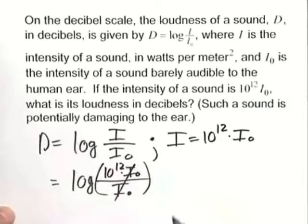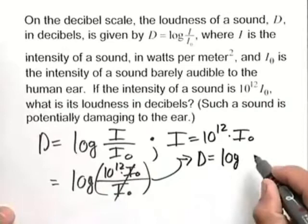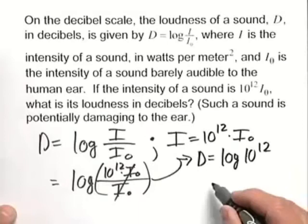Now within our logarithm, we can cancel the i sub zeros, and from this we have the equation d is equal to the common log of 10 to the 12th power. By definition of a common log in base 10, we know that d is equal to 12.